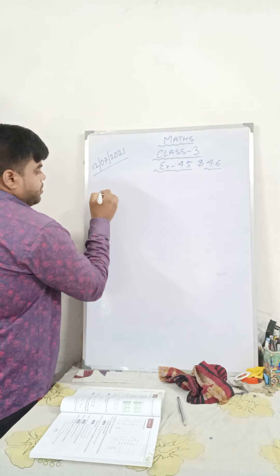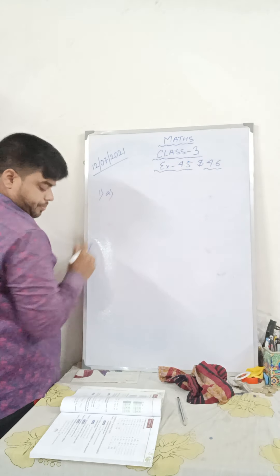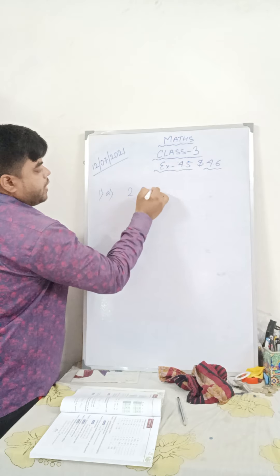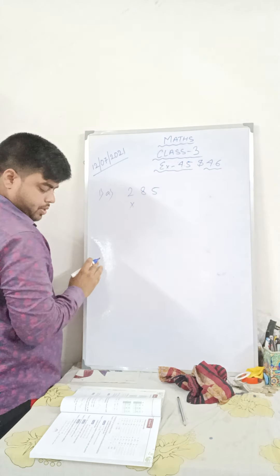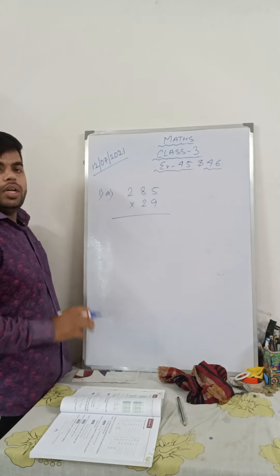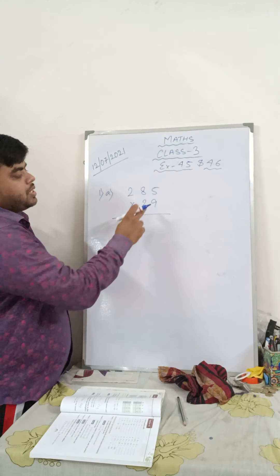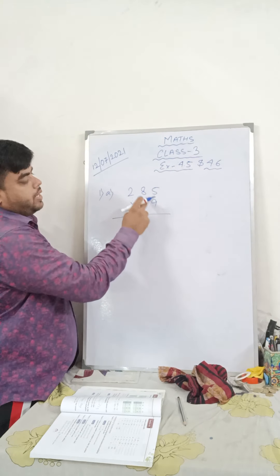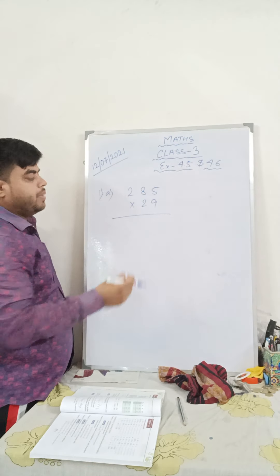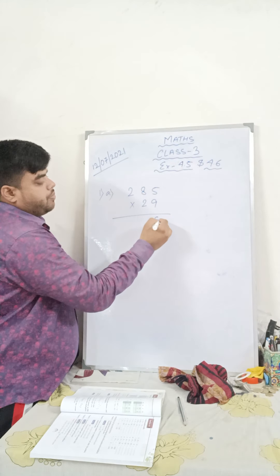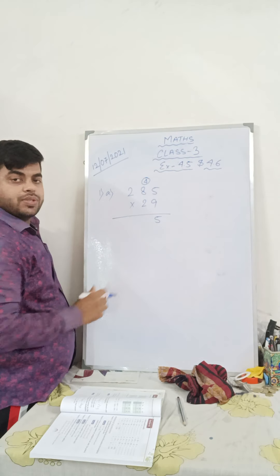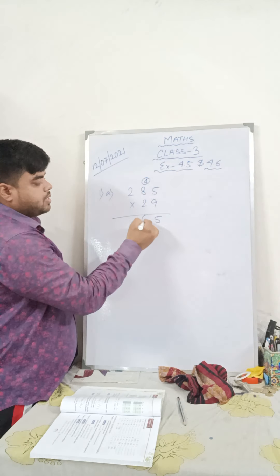Let us take an example: 1A, 285 multiplied by 29. The rule of multiplication says first you multiply 9 with 5, then 9 with 8, then 9 with 2. So: 9 fives are 45, 4 in hand. 9 eights are 72 plus 4 is 76, 7 in hand. 9 twos are 18 plus 7 is 25.